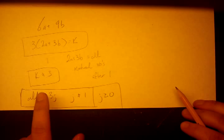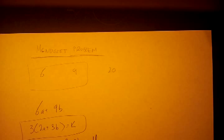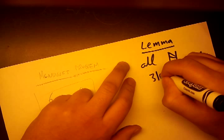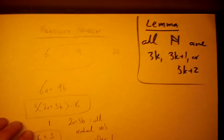We'll use a lemma: all natural numbers are of the form 3k, 3k+1, or 3k+2. If we use only sixes and nines, we have no choice but to make only multiples of three. So how do we break out of this multiple-of-three trap? We introduce the twenty.